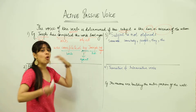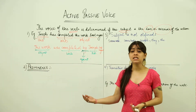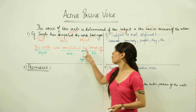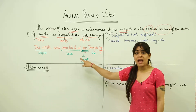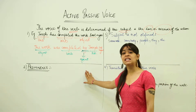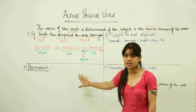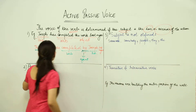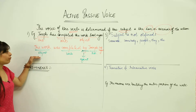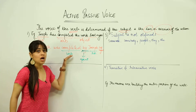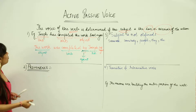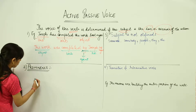It becomes easier to identify whether a sentence is passive or active voice because of one single word — 'by.' If in a sentence we use the agent 'by,' it is definitely a passive voice, because it shows us the link between the subject and the object with the help of a verb.